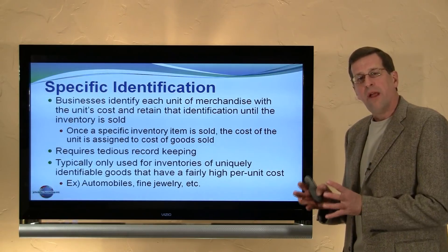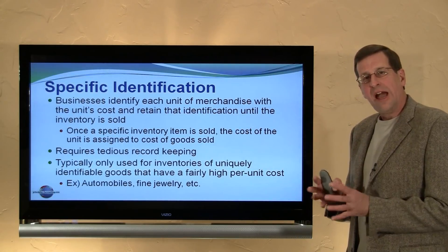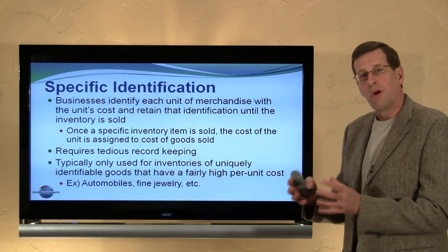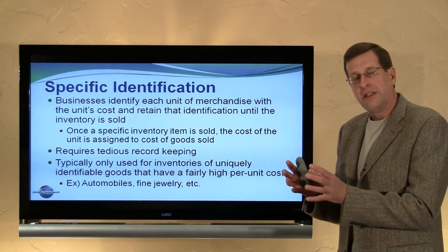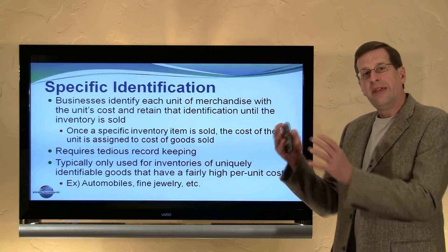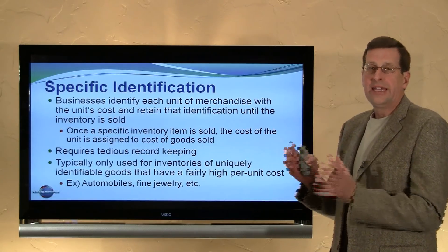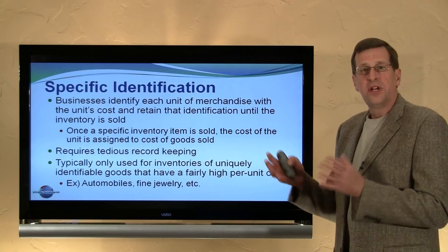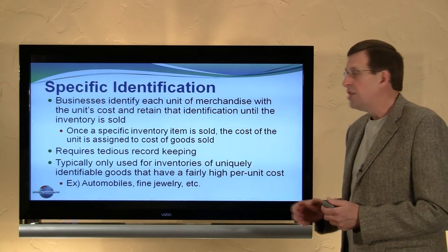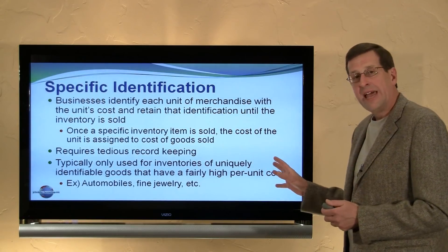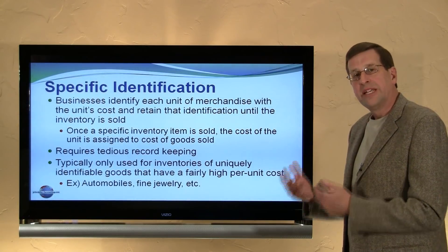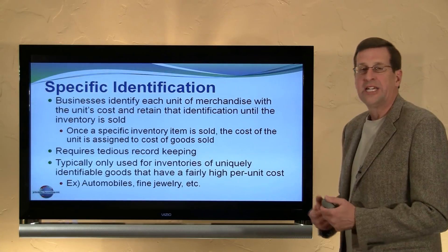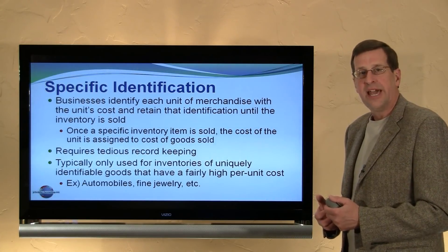This concludes our look at the calculations under FIFO and LIFO using a periodic system, where we waited until the end of the period to calculate our ending inventory, cost of goods sold, and gross profit. In the next module, we will look at these same methods under a perpetual system — an alternative process for managing this data flow.